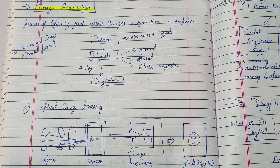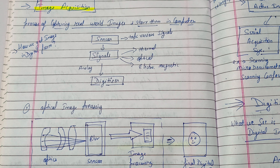Hello friends, welcome to our channel. Today's topic is image acquisition. What is image acquisition? The types are: first, optical image processing; second, analog image processing; and third, digital image processing.